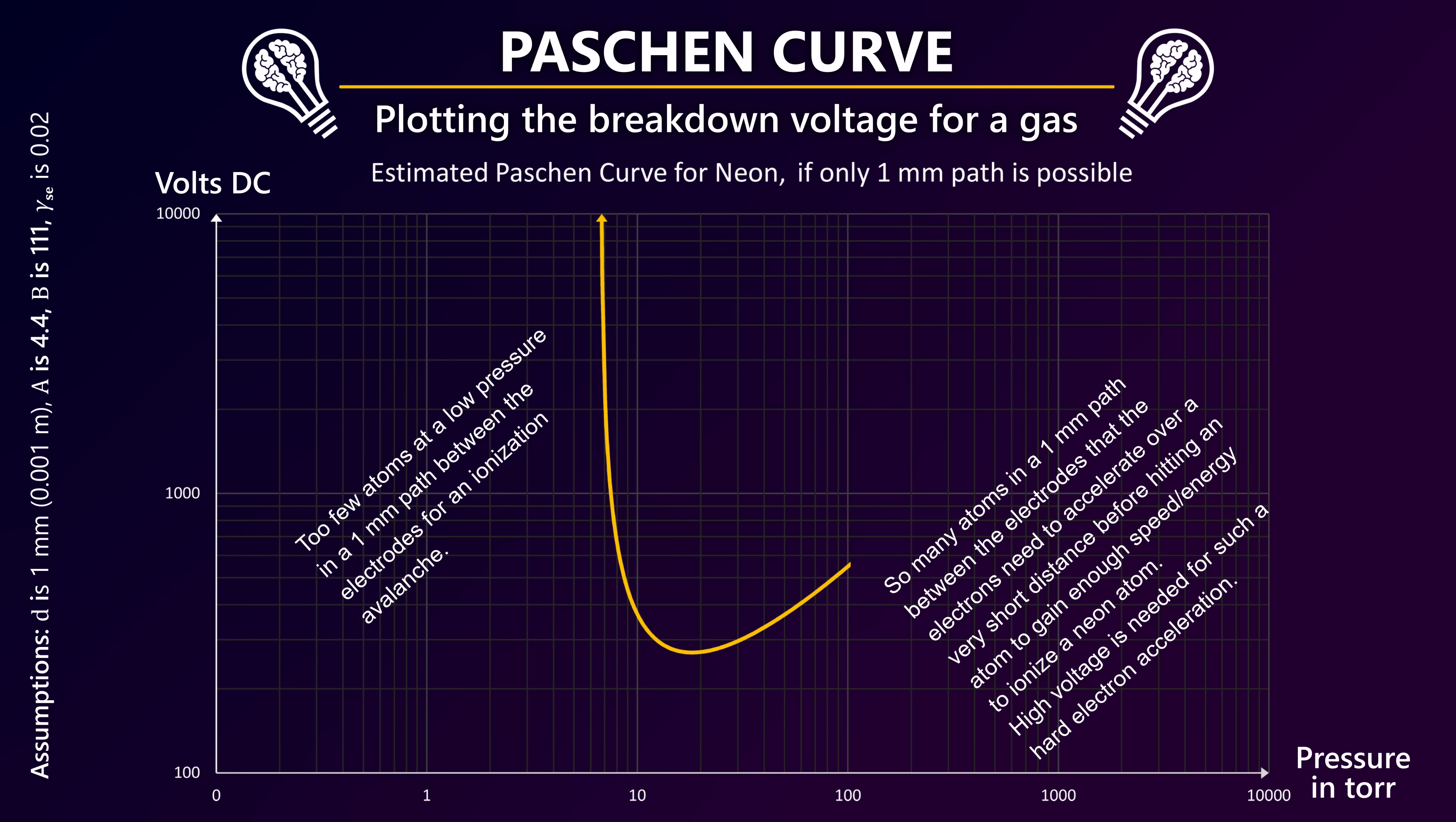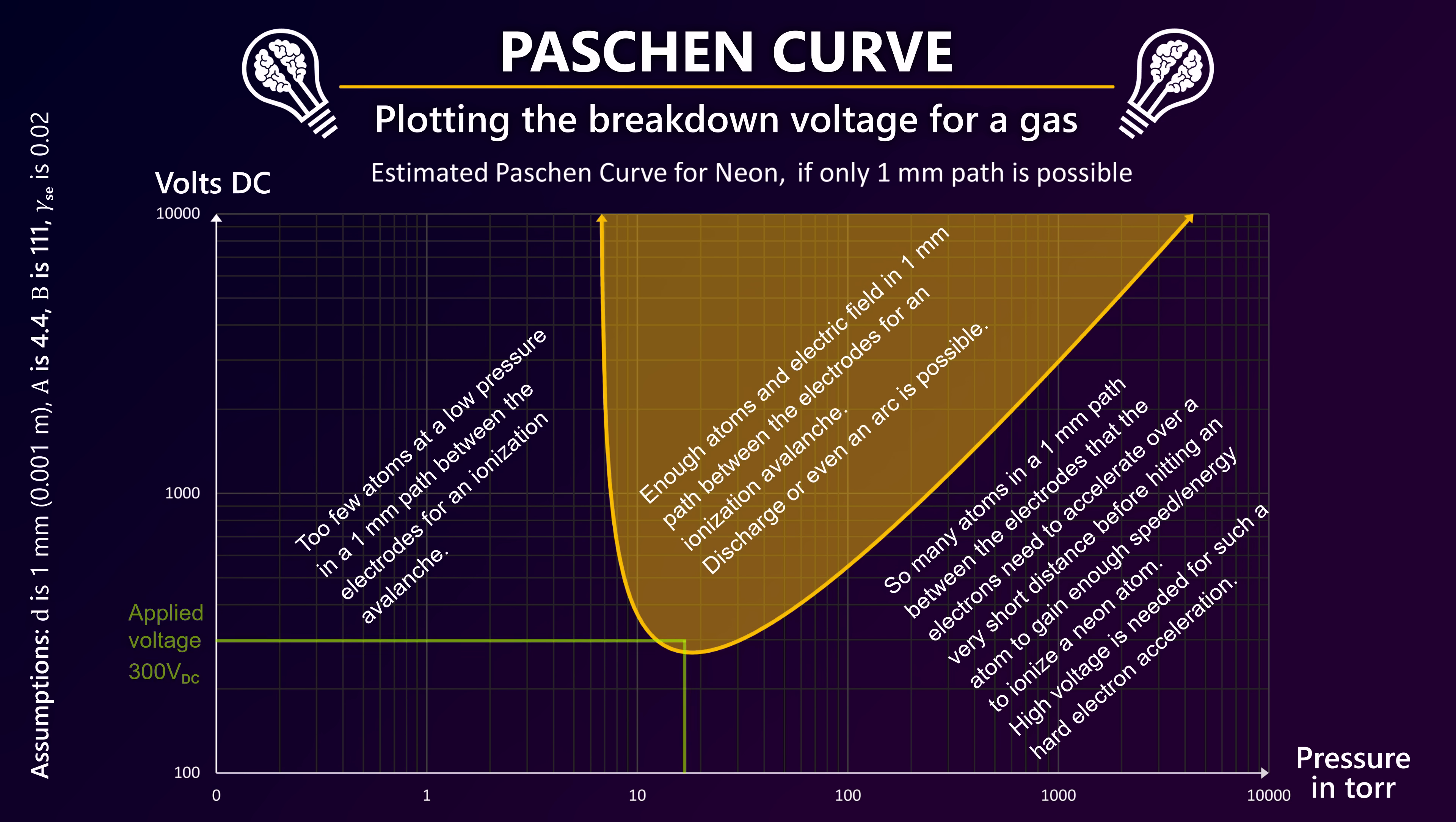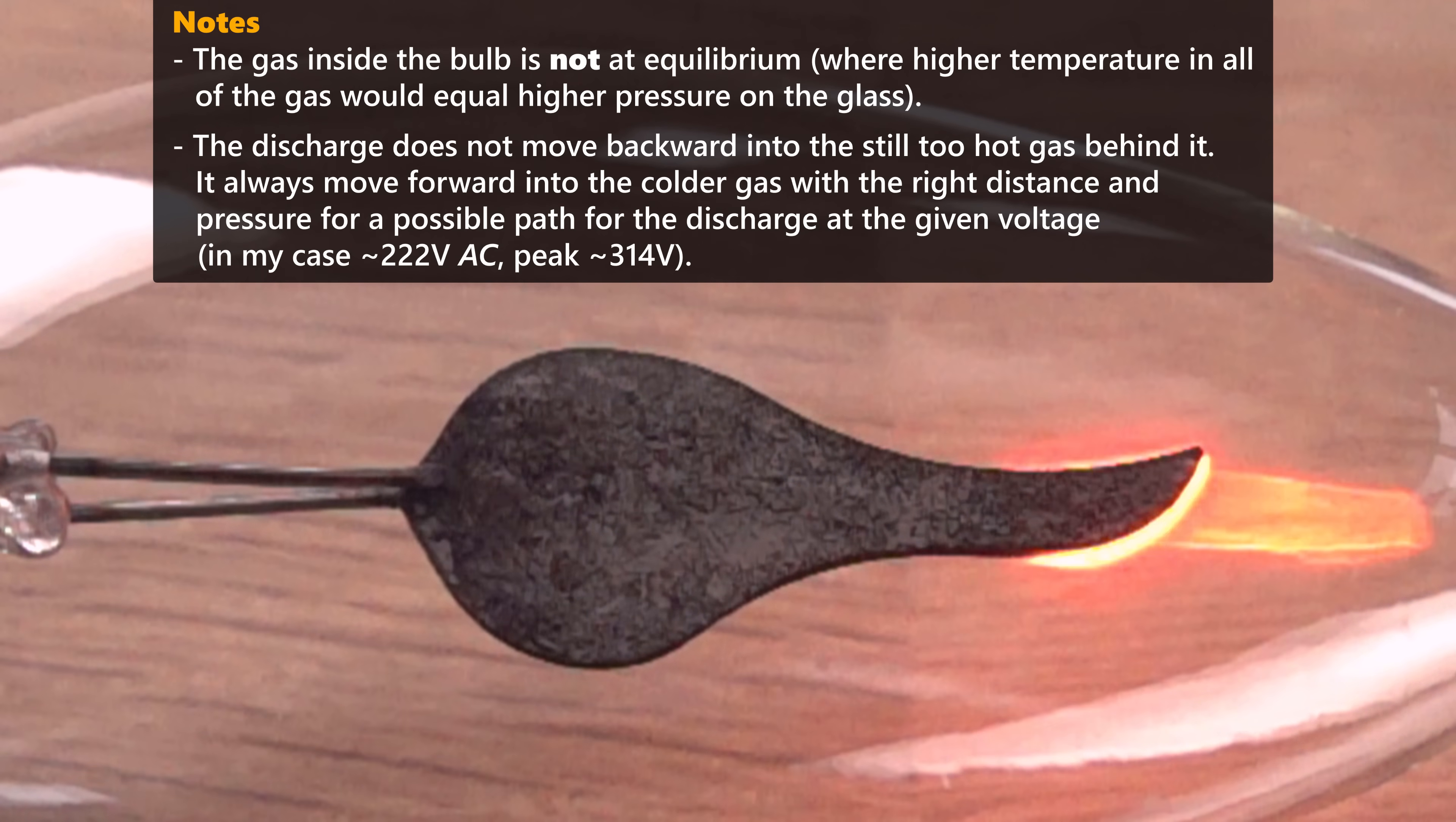The reason for the motion is found in the other factor in Paschen's law – pressure. Once the discharge strikes, the glowing part of the neon is fiercely heated up. Heated gas expands, lowering the local density and pressure inside the glowing part of the neon until it is too low for the discharge, forcing the discharge to move on into the colder, denser, locally higher pressure gas next to it.